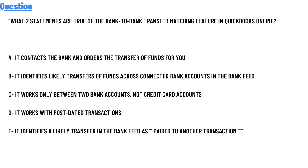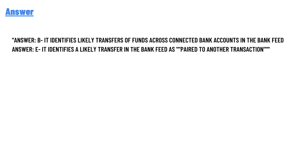Option D: it works with post-dated transactions. Option E: it identifies a likely transfer in the bank feed as paired to another transaction. The correct answers are Option B and Option E.